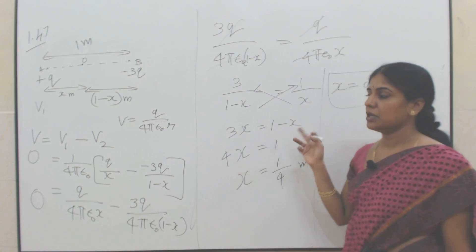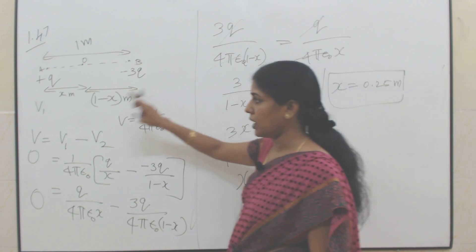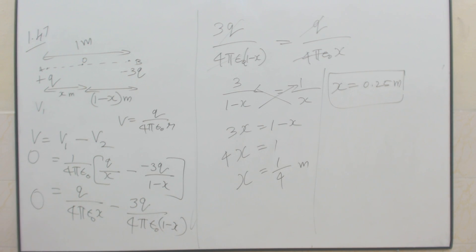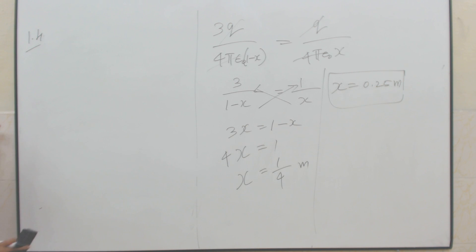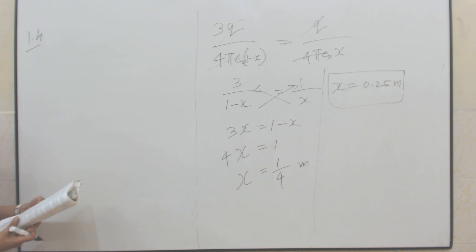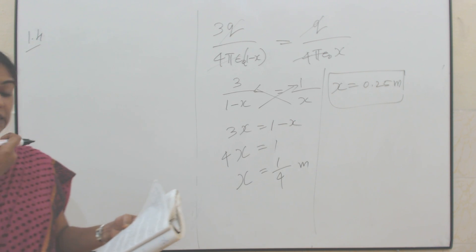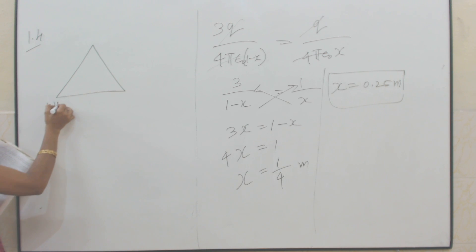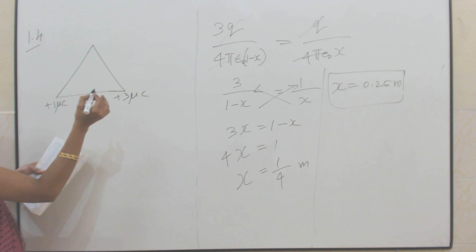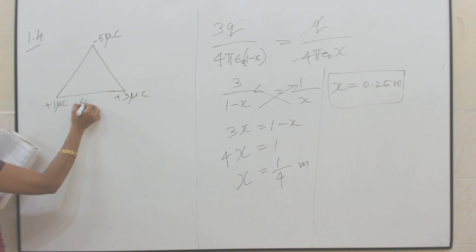So the answer is: the potential is zero at a distance of 0.25 meter from the charge +q. Next, problem 1.48: three charges +1 μC, +3 μC, and -5 μC are kept at the vertices of an equilateral triangle of side 63 centimeters. In an equilateral triangle all three sides are equal.